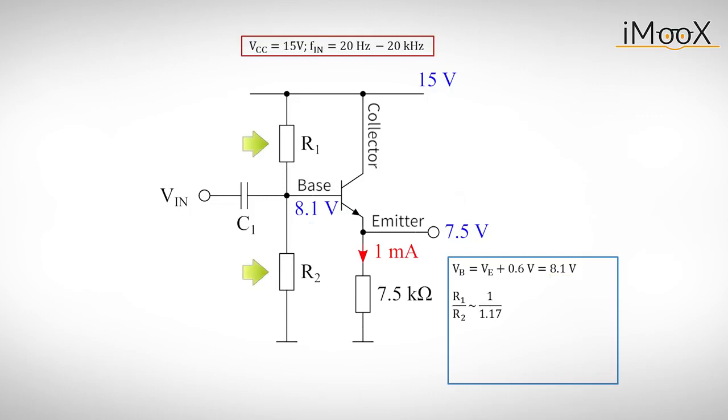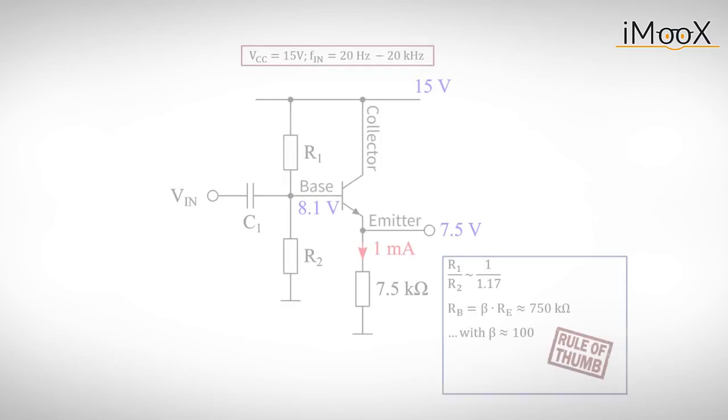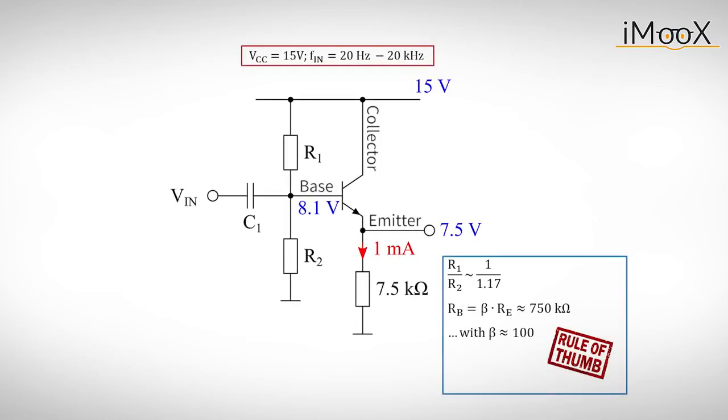Now what about the voltage divider? On the one hand, the divider must provide 8.1 volts at the base, so the ratio R1 to R2 must be 1 to 1.17. On the other hand, we want the input impedance to be large compared to the output impedance. We already know that the impedance looking into the base is approximately beta times the resistance at the emitter, or 750 k, estimated with our first rule of thumb.